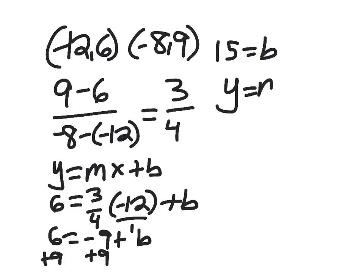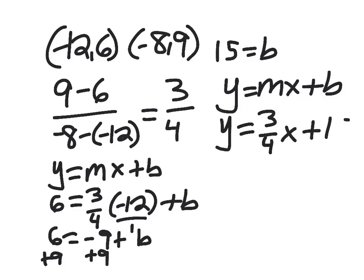Now I can go back to slope intercept form. So I have y equals mx plus b. So I have y equals 3 over 4x plus 15. That would be my final answer.